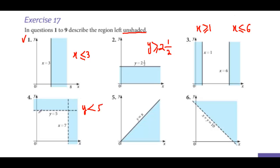Here, this line is y is equal to 5. The unshaded region is in the downward direction, so it is less than 5. And because the lines are dotted lines, we will not write any equal sign here — it is just y is less than 5. Similarly, this is also a dotted line, so we will not use any equal sign, and the unshaded region is on the left hand side with values less than 7, so it is just x is less than 7.